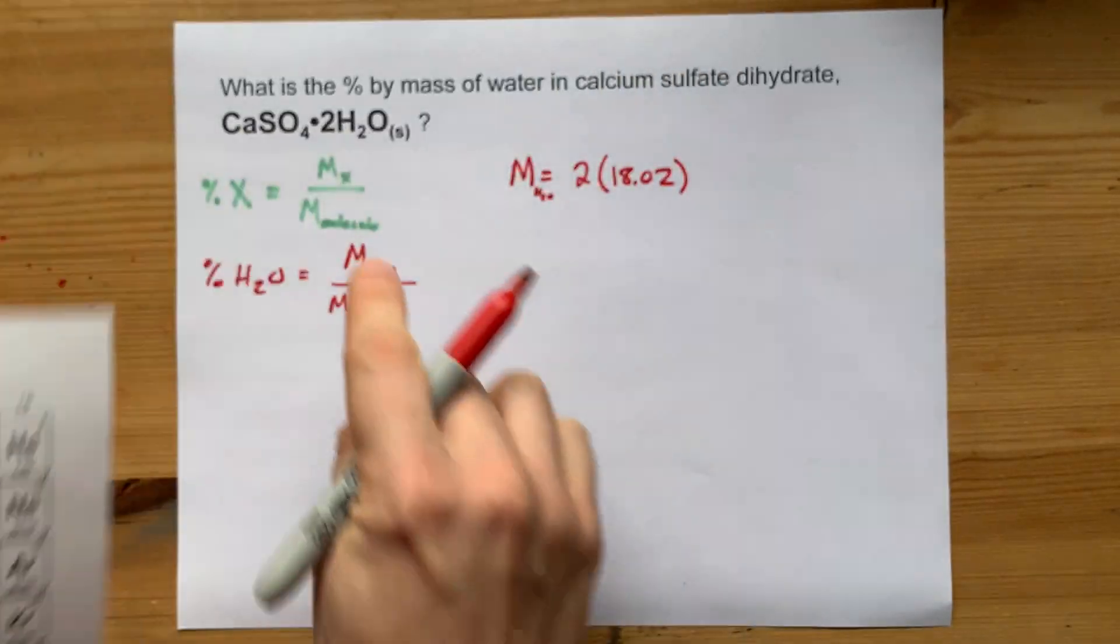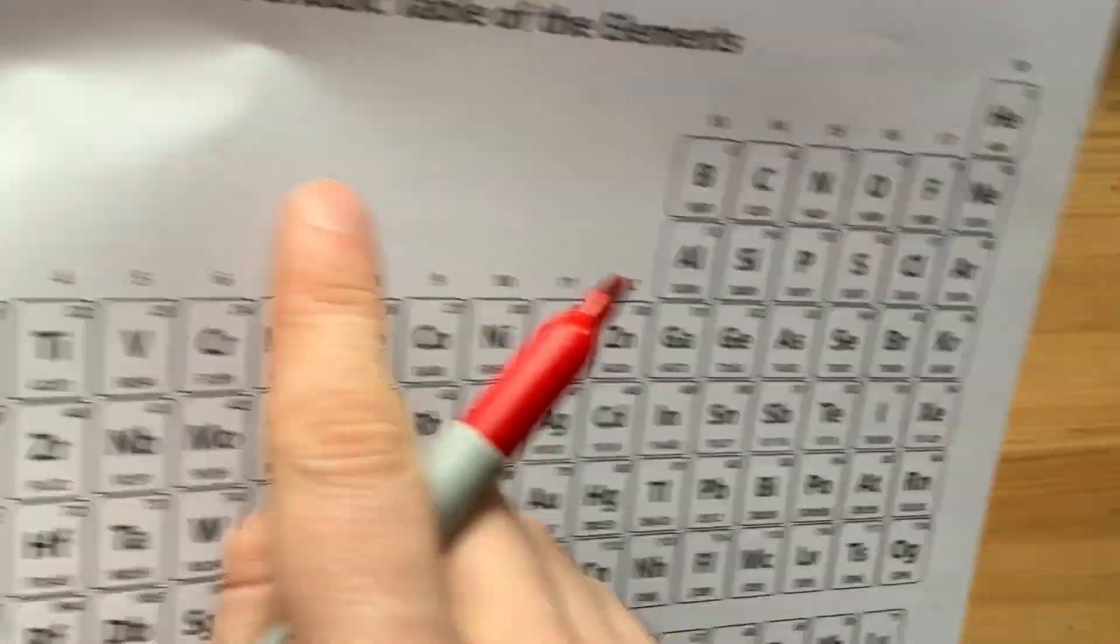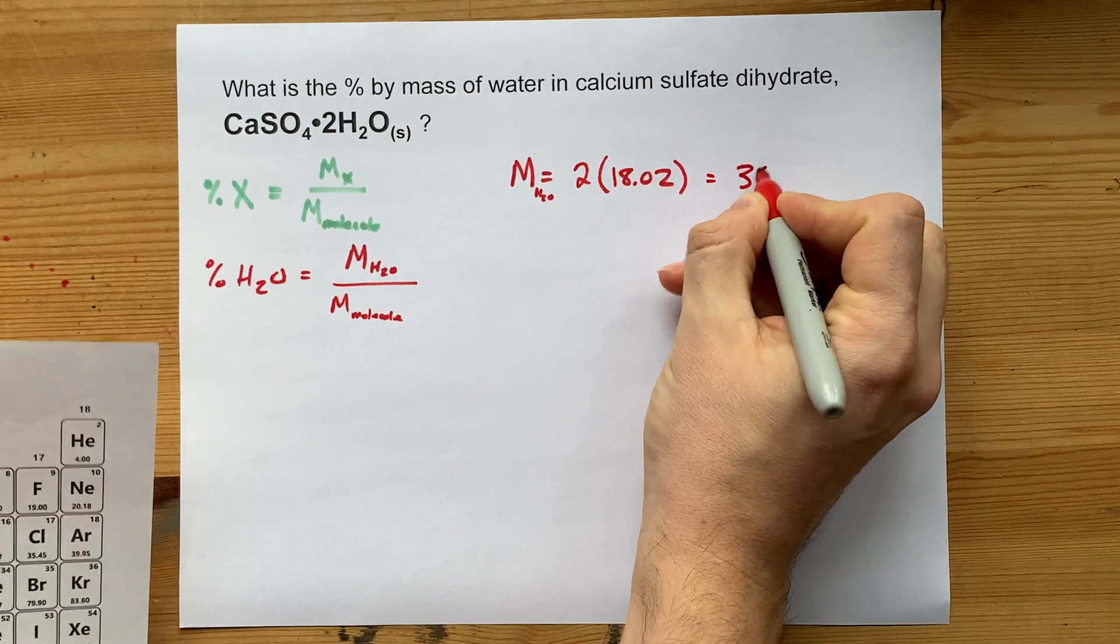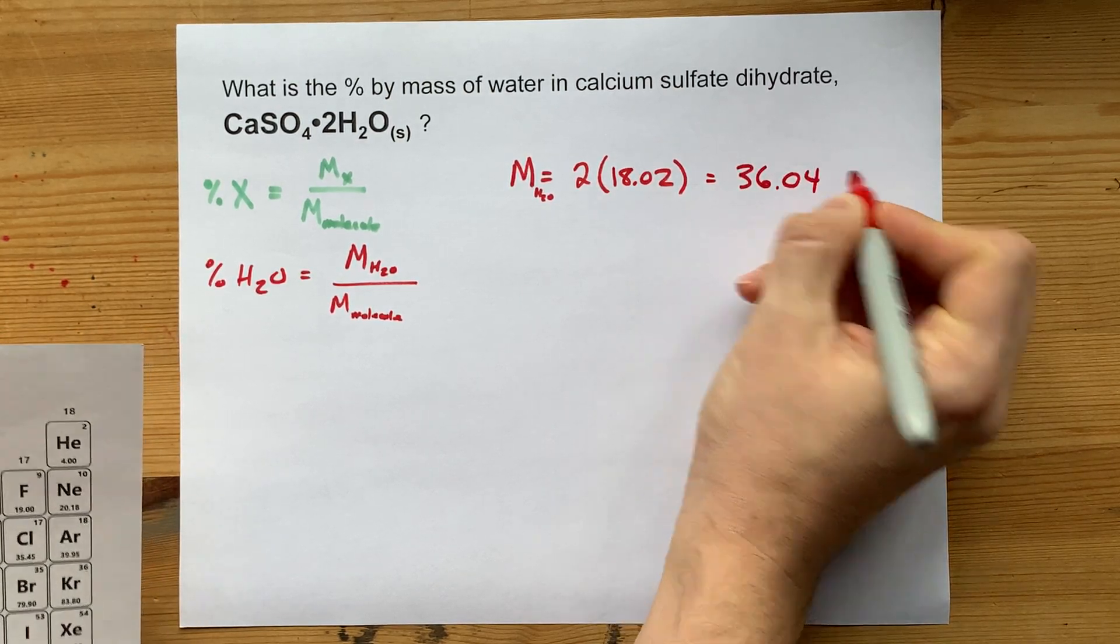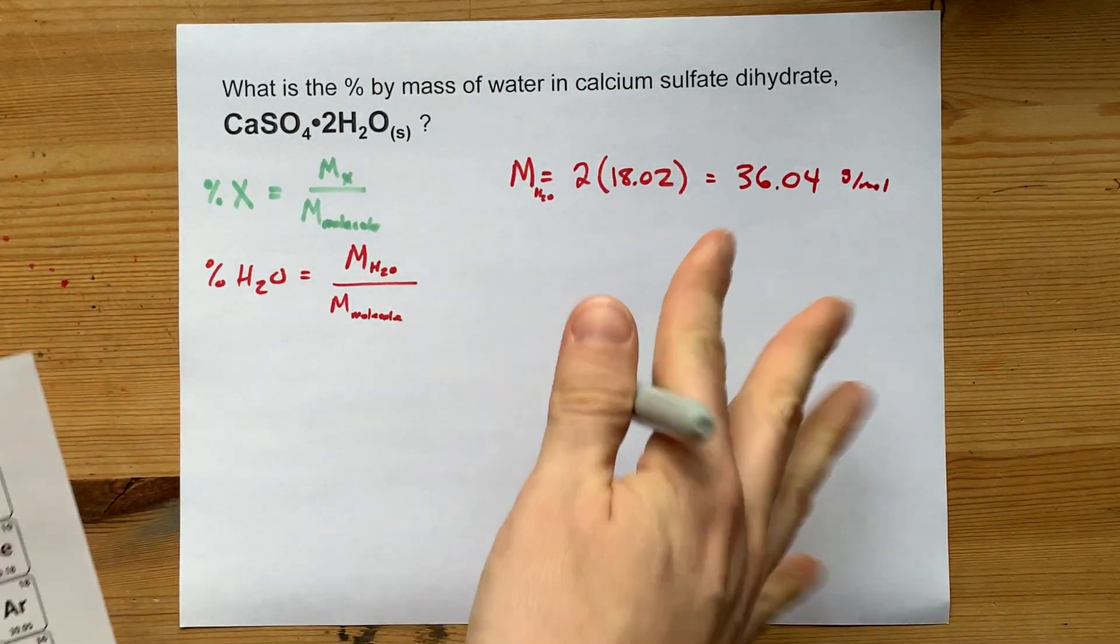or 16, for the O. Well, 18.02 is two H's and one O, H2O, right? Get it? So that means 36.04 of the grams per mole that this molecule weighs is water.